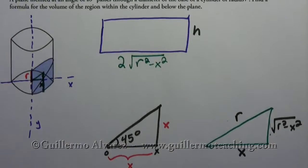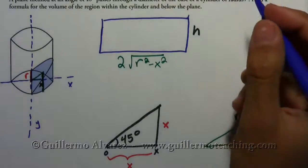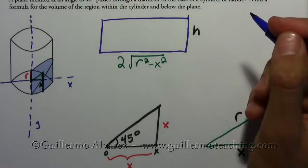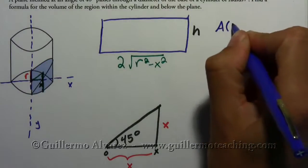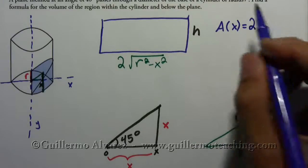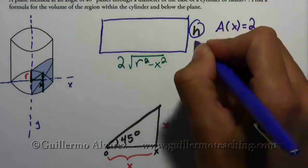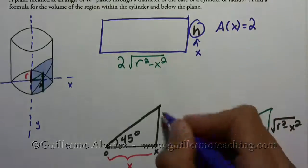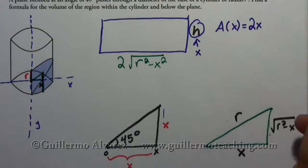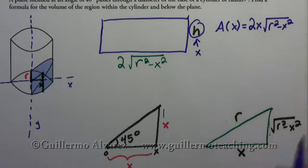And that's it. That's my cross section. So now I can find a formula for the area of the cross section. The area is equal to, so the area with respect to x, is equal to the base times the height. Well, the height, we already, we just talked about it. The height is equal to x. It's this one right here. So 2x times the square root of r squared minus x squared.